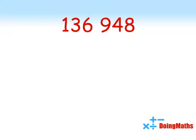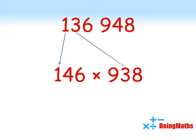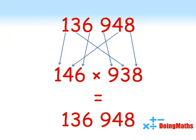Here's a bigger vampire number. Let's check it. 136,948. We can split that up into 146 times by 938. Let's just check the digits. There's the 1, 3, 6, 9, there's the 4, and there's the 8. We've got exactly the same six digits. Our fangs have got the same number of digits in each number, and if we multiply them together, we get back to our original number.